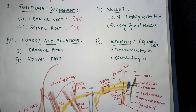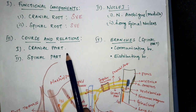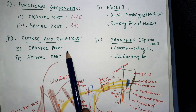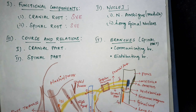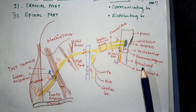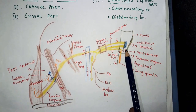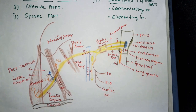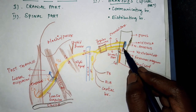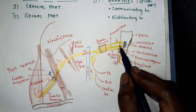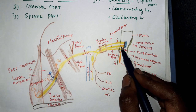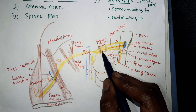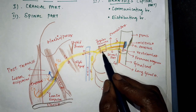Now we will study the course and relations separately for the cranial part and the spinal part. For the cranial part, it takes origin from the lower part of the nucleus ambiguus and attaches to the posterolateral sulcus of the medulla, just below the 10th cranial nerve. This nerve then runs laterally and enters into the intermediate compartment of the jugular foramen.